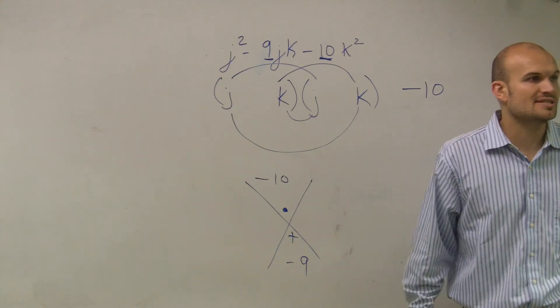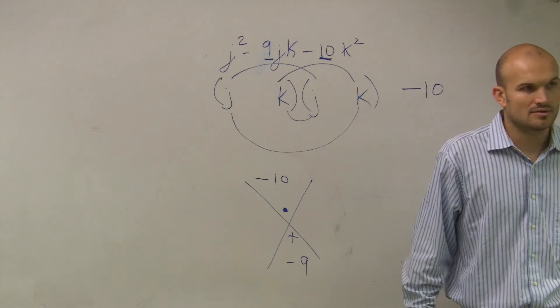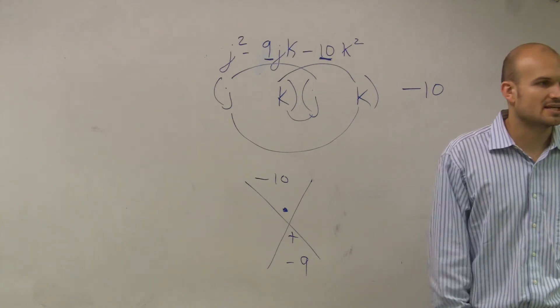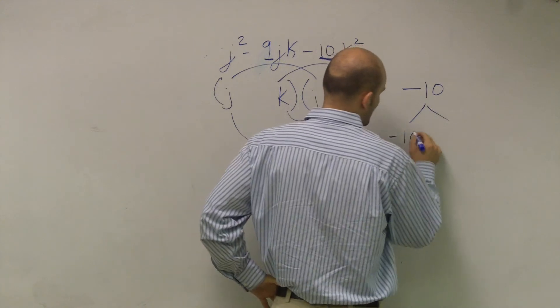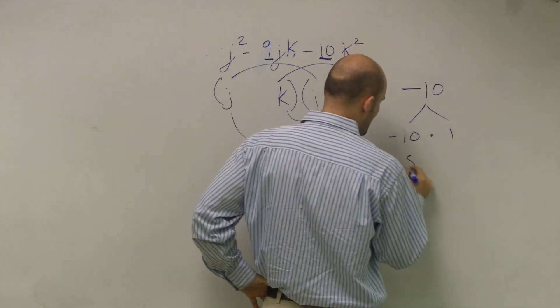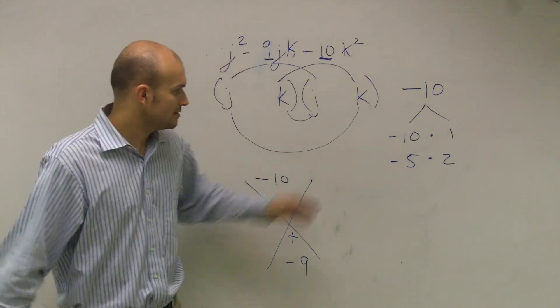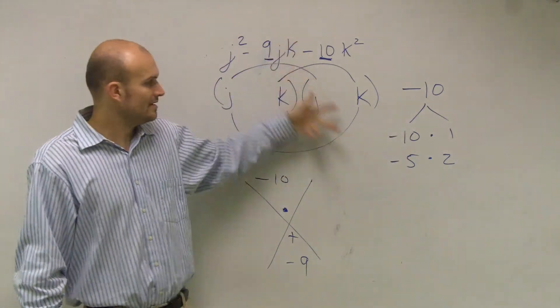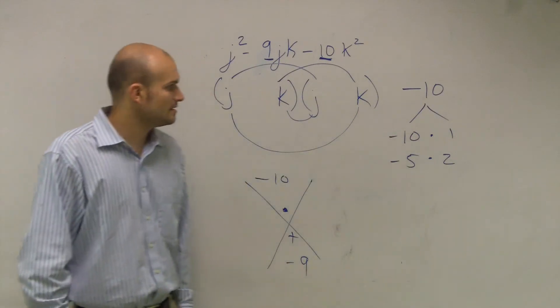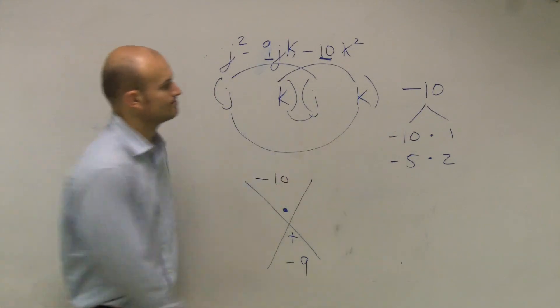So therefore, would the factor 10 times negative 1 even count? No, because that adding is going to give you a positive number. So the only two factors I would work with would be negative 10 times 1 and negative 5 times 2. You always pick the larger factor to be negative since your middle term is negative. Now which one of these adds up to give me negative 9? There we go.